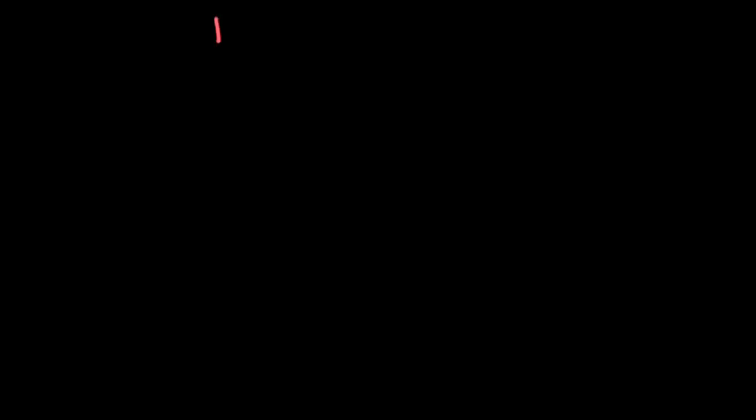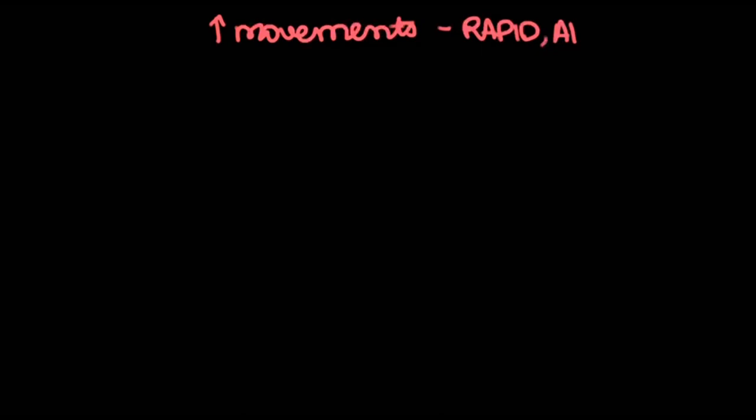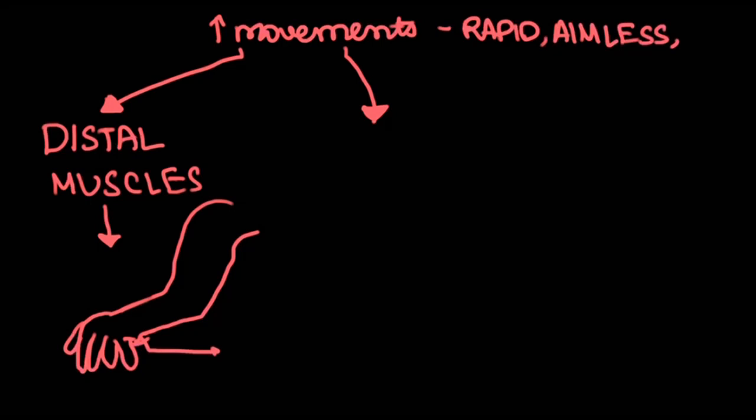females in the ratio of 3:1. In chorea, there are rapid, aimless, purposeless movements which are involuntary. It affects the distal muscles most, resulting in flexion of the wrist with extended metacarpophalangeal joints, which is the characteristic